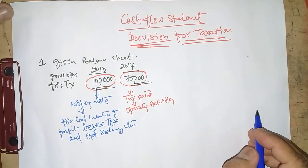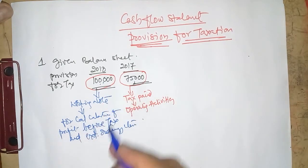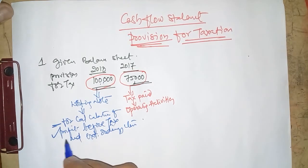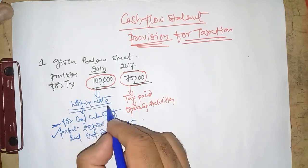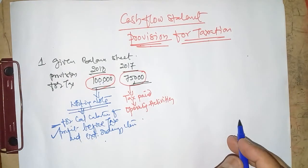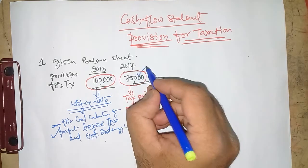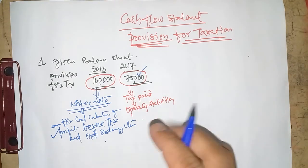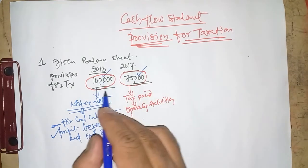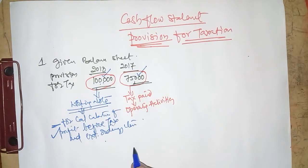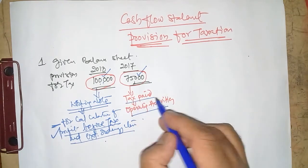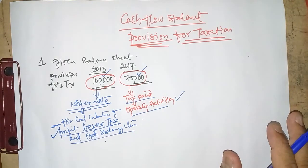This closing provision is to be added while calculating profit before tax and extraordinary items, whether under working notes or directly in the cash flow statement. The opening provision will be considered as tax paid during the financial year, and the closing provision will be considered as provision made during the financial year and will be added in profit before tax and extraordinary items, whereas the opening provision will be deducted as tax paid under operating activities.